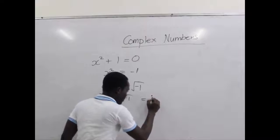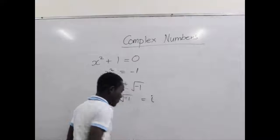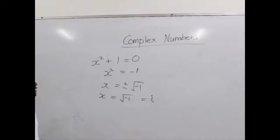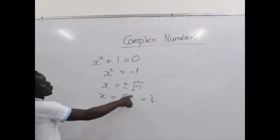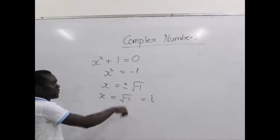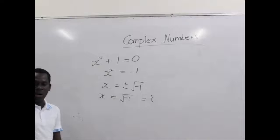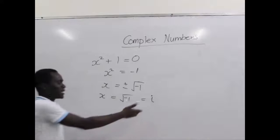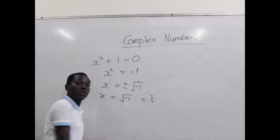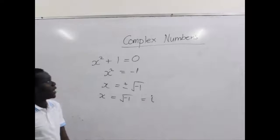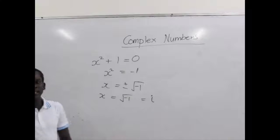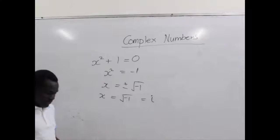So, the symbol i stands for the square root of negative 1, and this is how we got to have complex numbers.